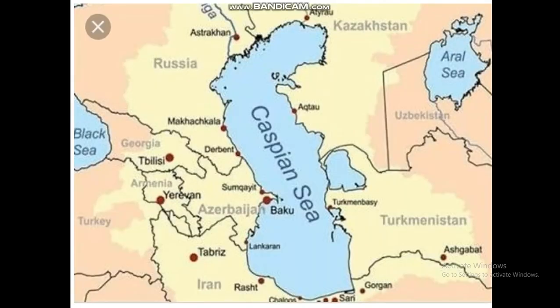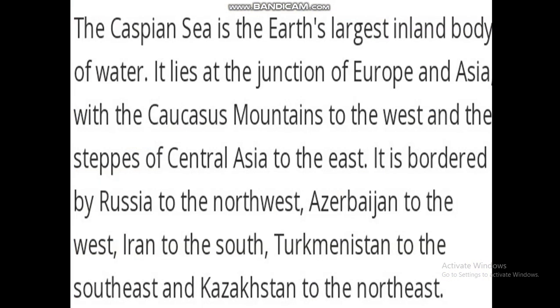Here is the map of the Caspian Sea. The Caspian Sea is the Earth's largest inland body of water. It lies at the junction of Europe and Asia, with the Caucasus Mountains to the west and the steppes of Central Asia to the east. It is bordered by Russia to the northwest, Azerbaijan to the west, Iran to the south, Turkmenistan to the southeast, and Kazakhstan to the northeast.